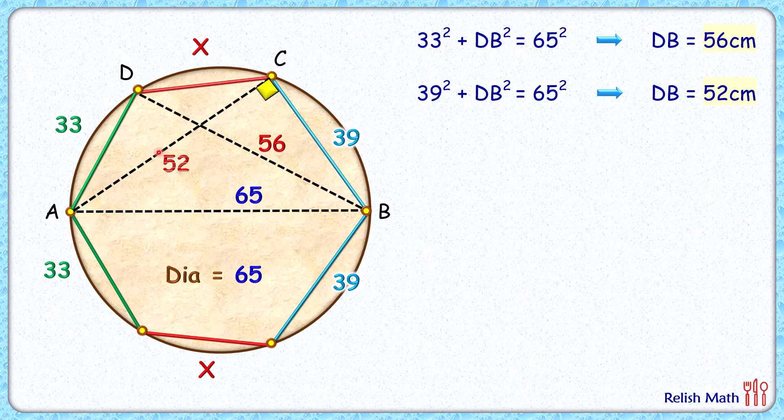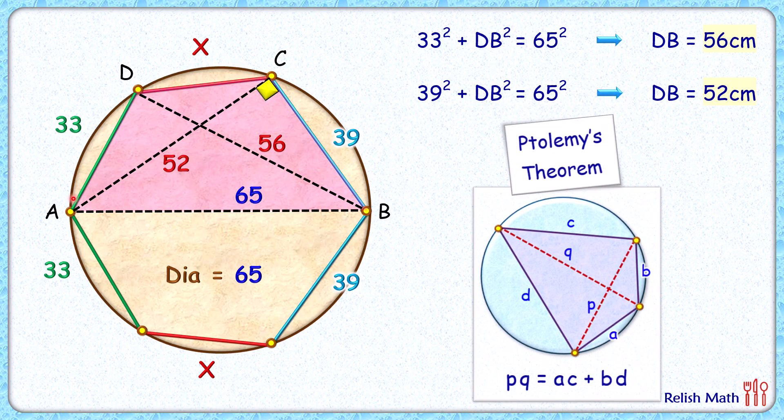Now in this cyclic quadrilateral ABCD, applying Ptolemy's theorem which says that in a cyclic quadrilateral the product of diagonals equals the sum of product of sides.